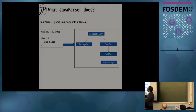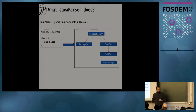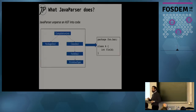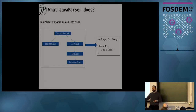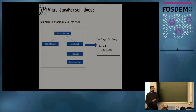JavaParser is, surprise surprise, a parser. You can throw it some code — in a file, in a string, whatever — and it gives you back an abstract syntax tree. But it can also do the opposite: you can give it an abstract syntax tree and it gives you back code. If you combine these two features, it means you can start with some code, get the AST, work on it, change it, and then go back to code — so you can do refactoring of existing code.